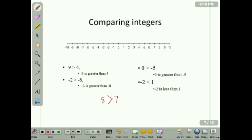In the case of negative 2 and negative 8, if we're going to graph these on a number line, negative 2 would be here, negative 8 would fall here, and because negative 2 is to the right of negative 8, it's larger.